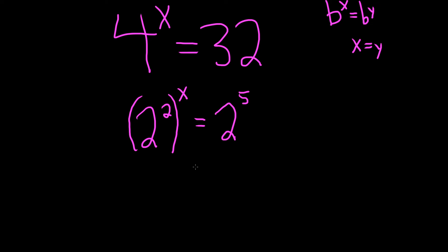Now we're almost there, we're not quite there. We have to actually simplify this left-hand side. So properties of exponents say that we multiply. So this is 2 times x. This is 2 to the 2x equals 2 to the 5.